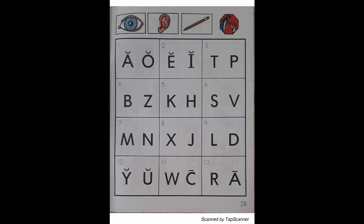Look at the letter in box 3. Listen as I say the sound of the letter: "t" — tiger — "t". With your pencil, circle the letter that reads "t".